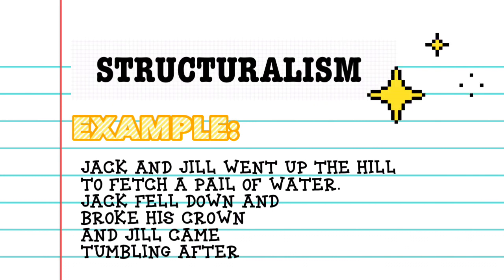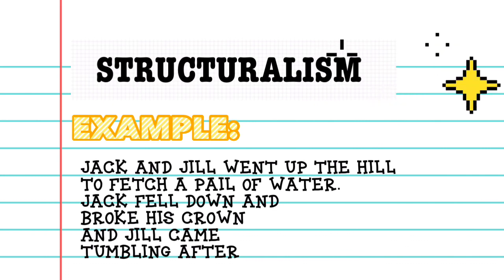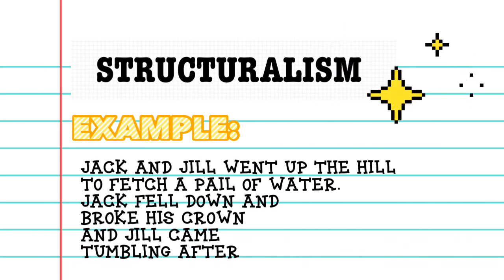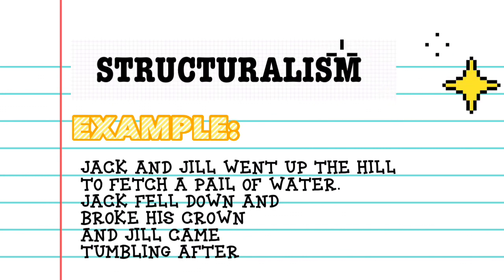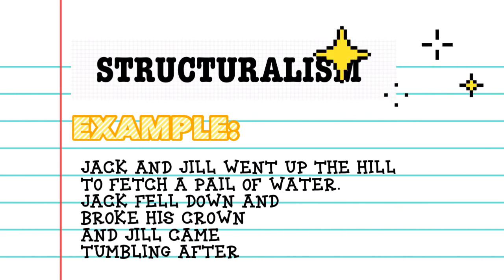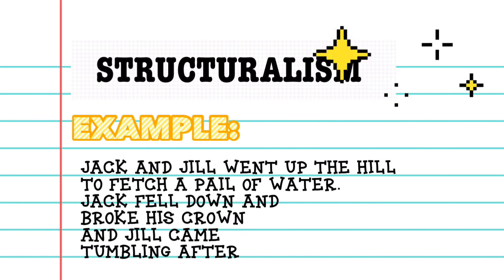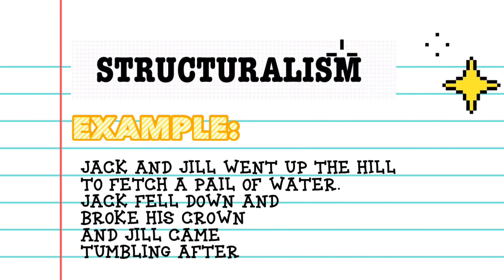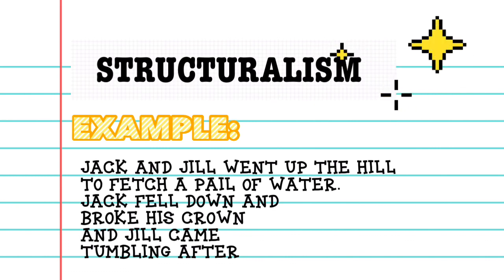First interpretation can be: we should be careful in all our actions, or else we can drag others down with us. It can also be interpreted as Jack's crown may symbolize authority, so we can apply this to governance. If the ruler fails, it affects the people.